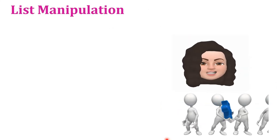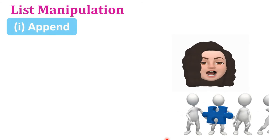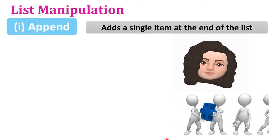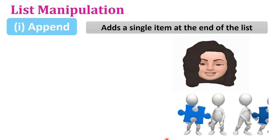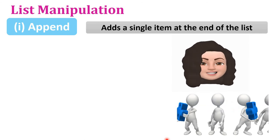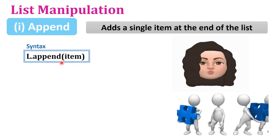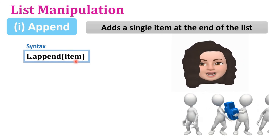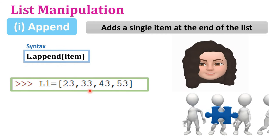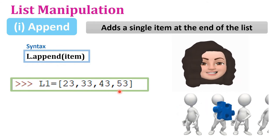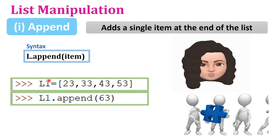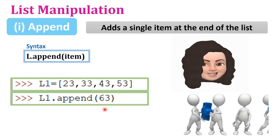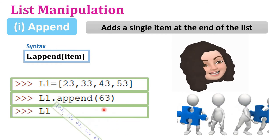The first list manipulation is append. Append adds a single element at the end of the list. The syntax is: list_name.append(element). For example, L1 is [23, 33, 43, 53]. To add 63, we write L1.append(63). After this, L1 becomes [23, 33, 43, 53, 63] — 63 is added at the end of the list.